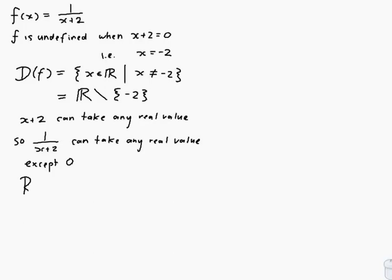So the range is any real value except 0. The range of f is the set of y in R such that y is not equal to 0, which we could also write as the set of real numbers without 0. We have to put the curly braces around the 0 because this is set notation — you need to have a set next to that without sign.